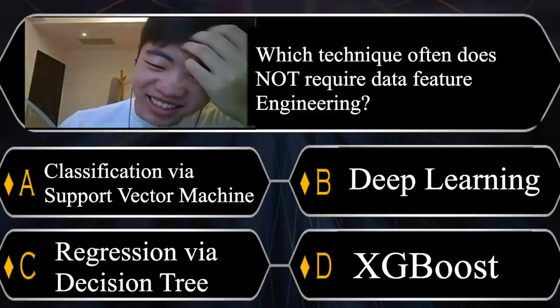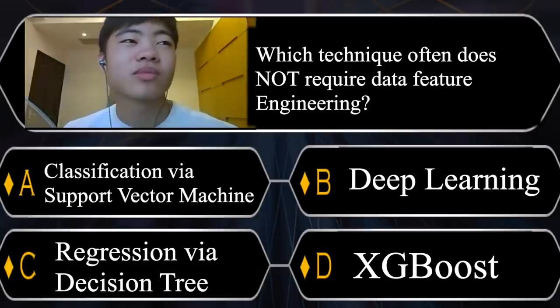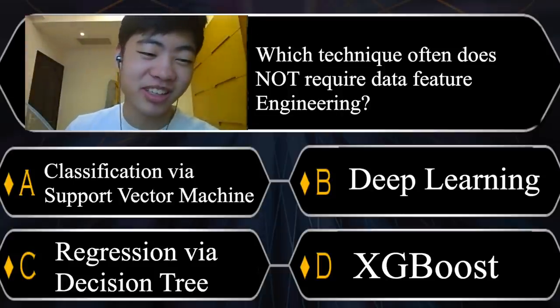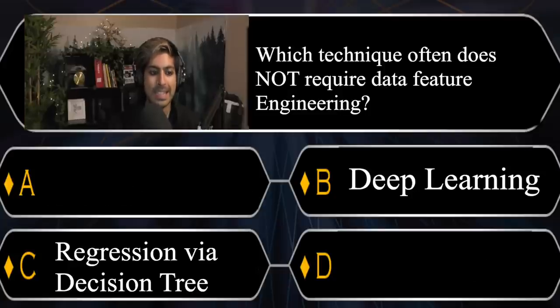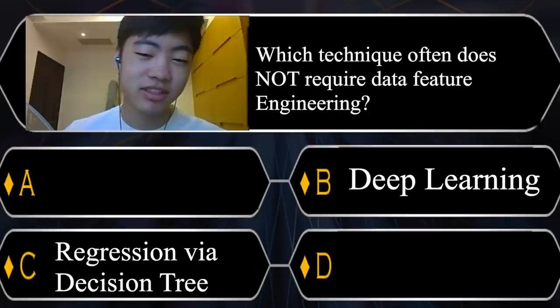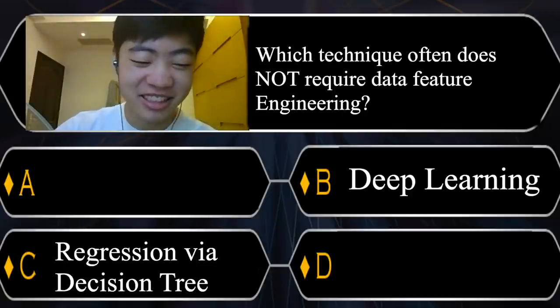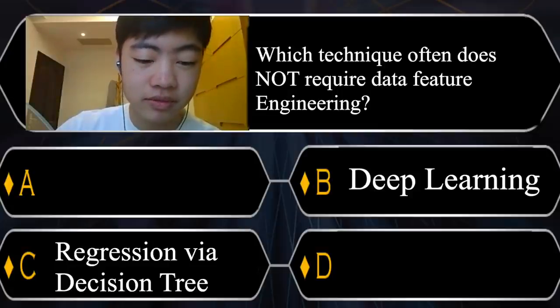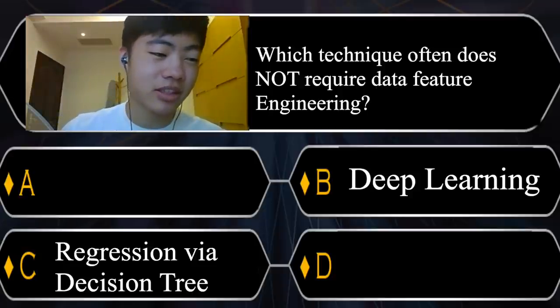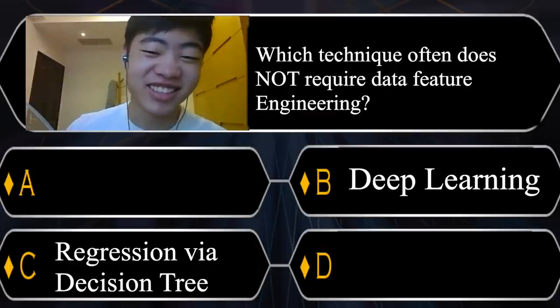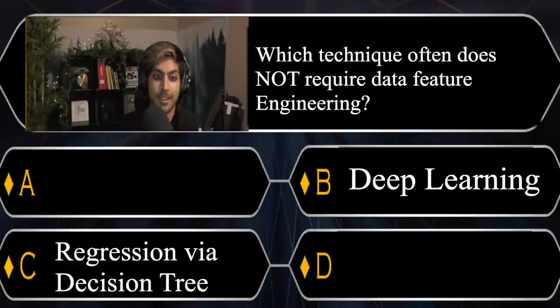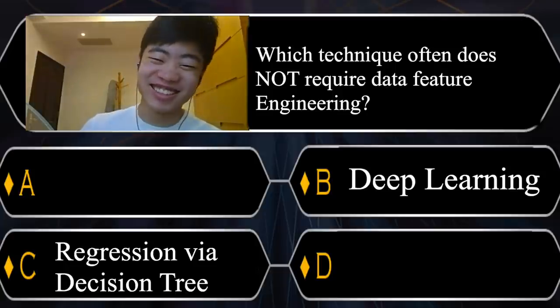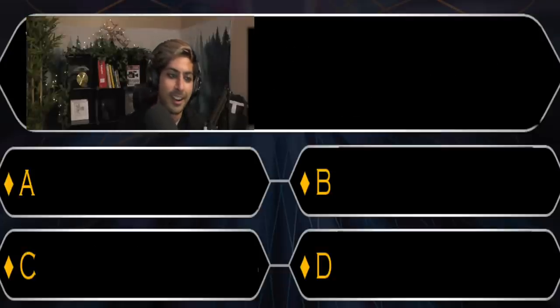Actually, I'm not sure of any of the answers. You have two more lifelines. You can absolutely use them. Okay. I go with the 50-50. Absolutely. All right. We're going to take away two of the answers and only two will remain. Here we go. The two remaining answers are B, deep learning and C, regression via decision tree. If it's pretty new, then I've never heard of C, so I guess it would be the new one. So I guess I'll go with C. Is that your final answer? Yes, that is my final answer.